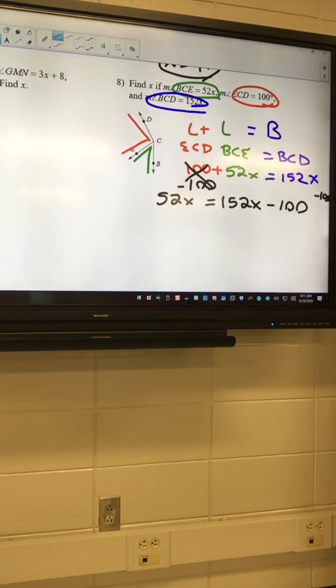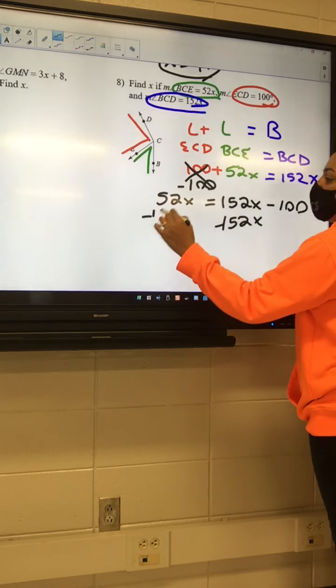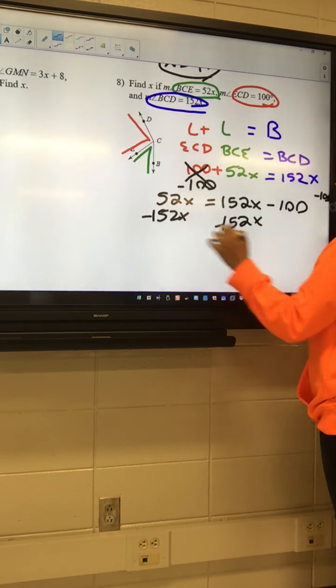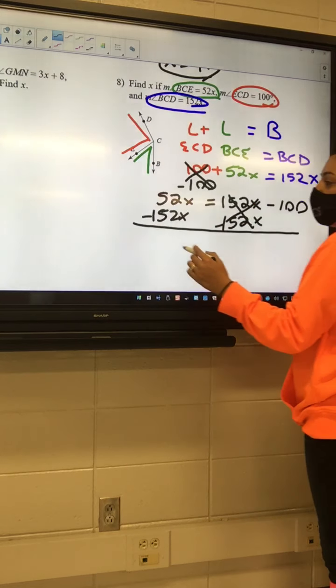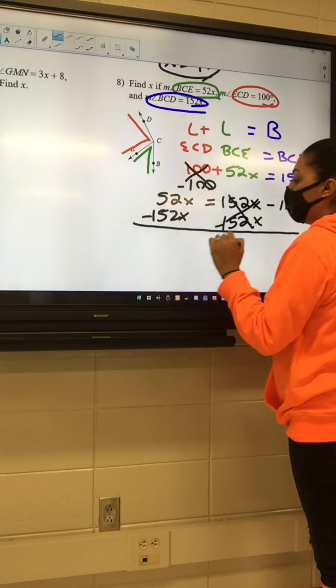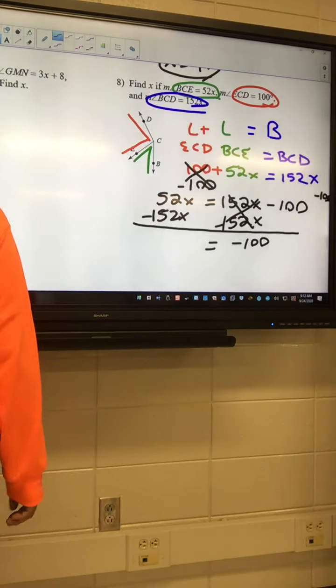And then letters go on the left. So I need to move that 152. So minus 152X minus 152X. So I got 52 minus 152. Let me punch it in. 52 minus 152.